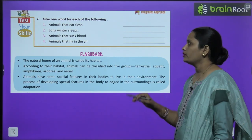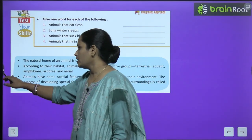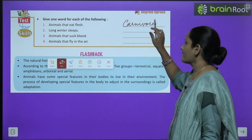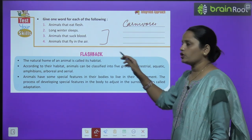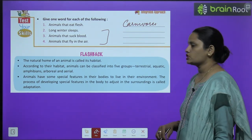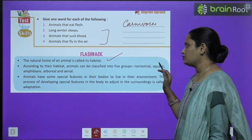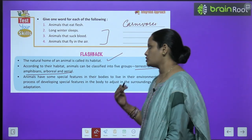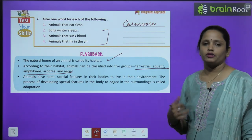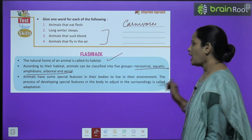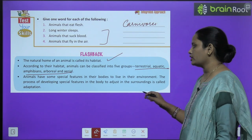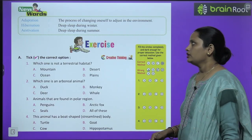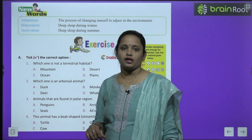Now let's do an exercise. Give one word for each of the following: animals that eat flesh are called carnivores. Similarly, complete the rest of the questions. Now let's move on to the flashback: the natural home of an animal is called its habitat. According to the habitat, animals can be classified into five groups — terrestrial, aquatic, amphibian, arboreal, and aerial animals. Animals have special features in their body to live in their environment, and the process of developing these features is called adaptation.